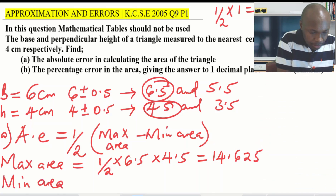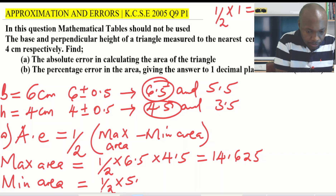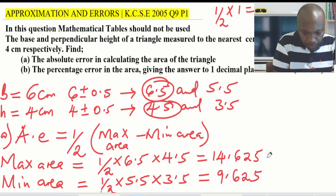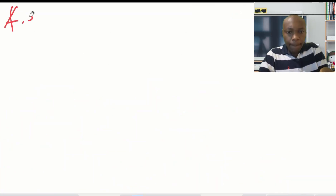The minimum area is obtained using the lowest limits for both measurements. That is half times 5.5 times 3.5, which gives 9.625. So: the maximum area, using upper limits, is 14.625, and the minimum area, using lower limits, is 9.625.